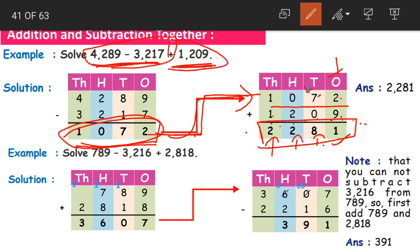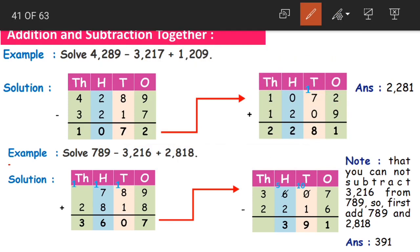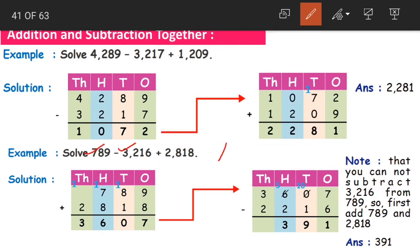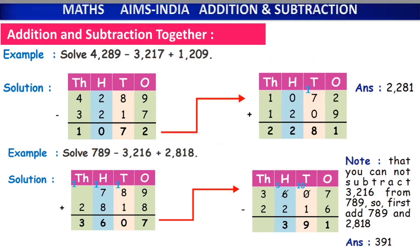First we subtracted the two numbers and then the difference was added to 1209. Coming to the next question: solve 789 minus 3216 plus 2818. Here, if we observe, 789 is the smaller number and 3216 is the larger number — small minus large is not possible. So what we'll do here is add first. We'll add the two positive numbers: 789 plus 2818.